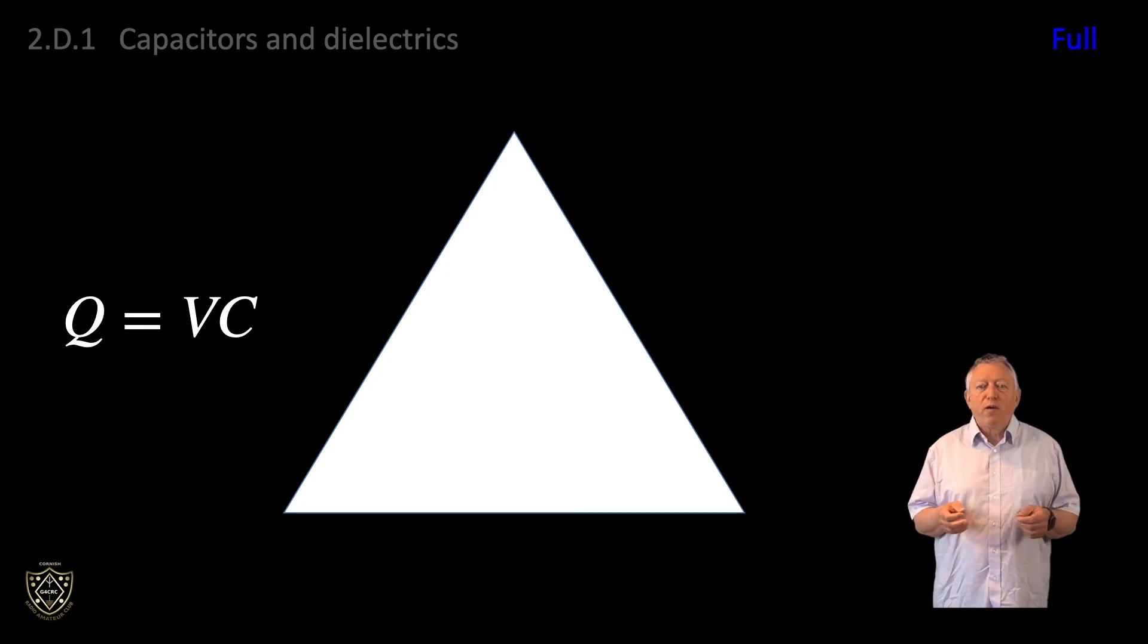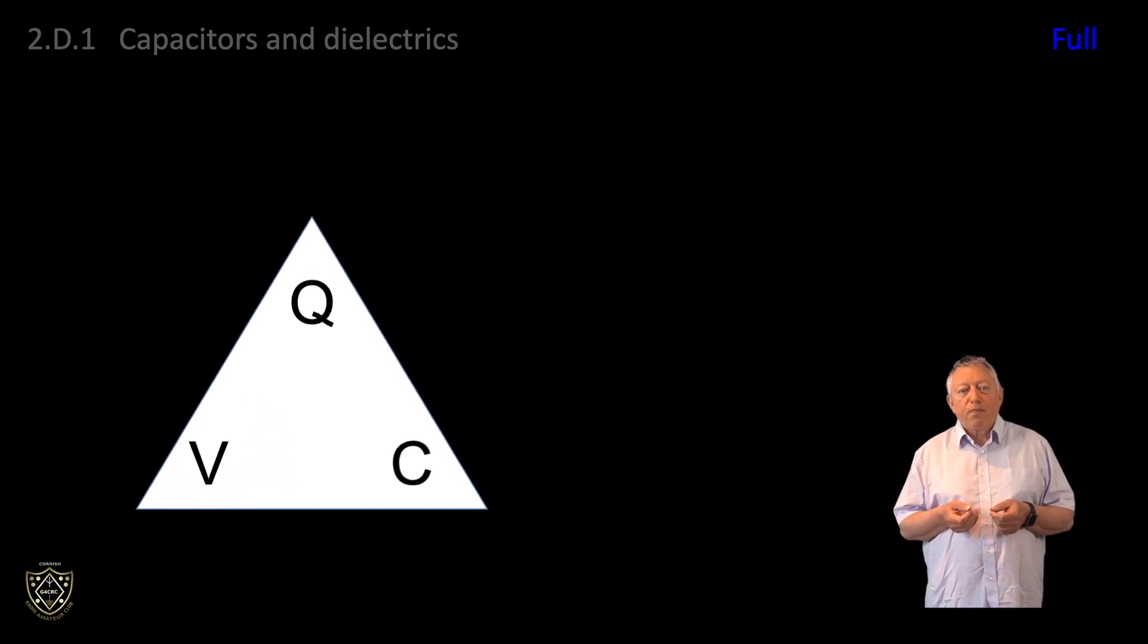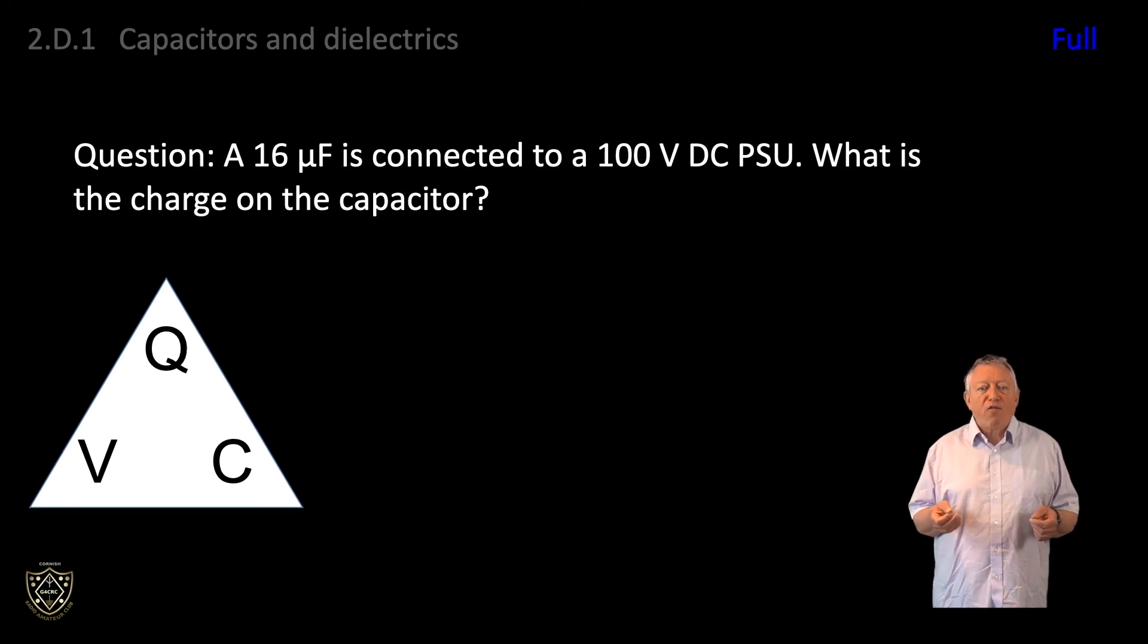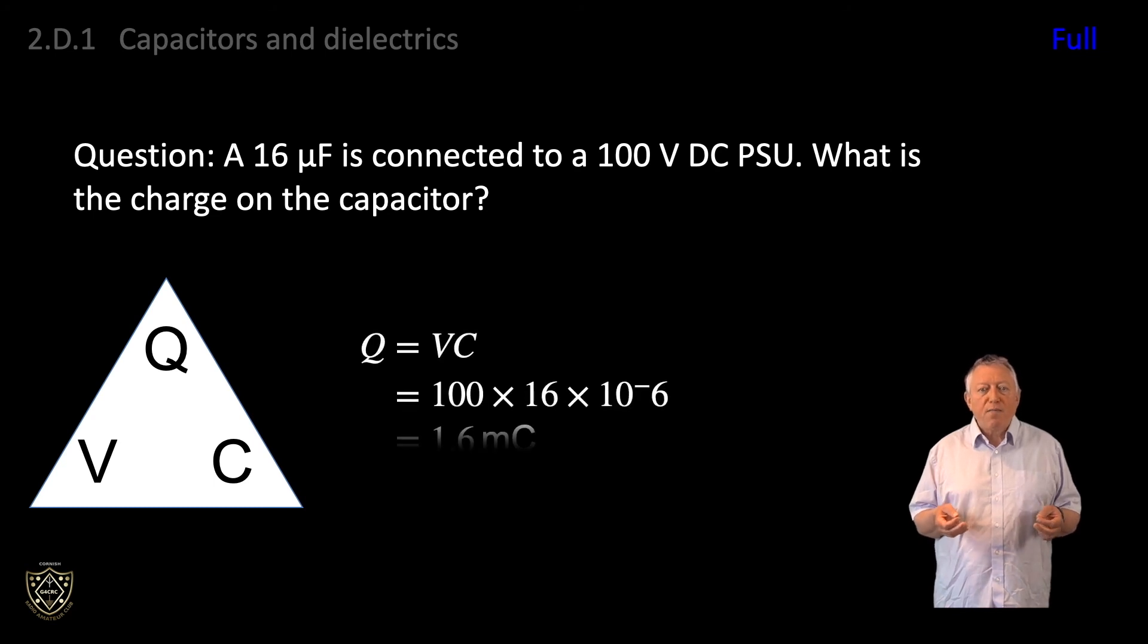As the formula Q equals V times C is a three-variable formula, like Ohm's law V equals I times R, you can use the triangle method to change the subject of the formula if you wish. Let's do a question. A 16 microfarad capacitor is connected to a 100 volt power supply. What is the charge on the capacitor? Q equals V times C, which equals 100 volts times 16 times 10 to the minus 6 Farads, which works out to be 1.6 millicoulombs.